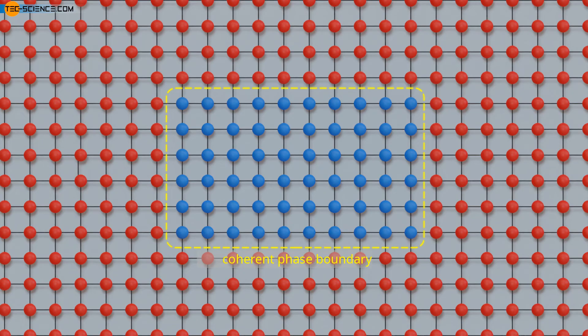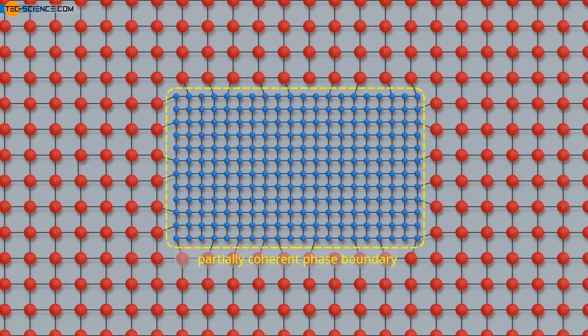However, if the phases differ somewhat in their properties, the lattice structures no longer merge seamlessly. Dislocations have to be incorporated at regular intervals. One then speaks of a partially coherent phase boundary.